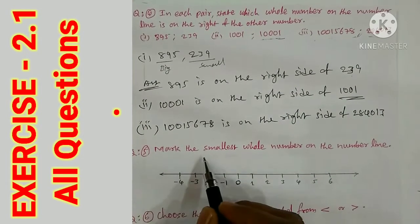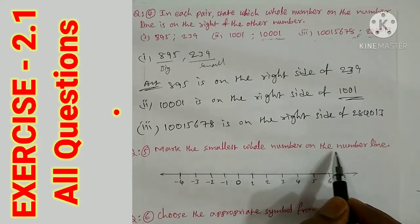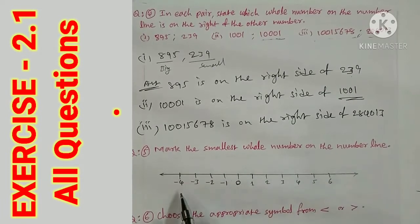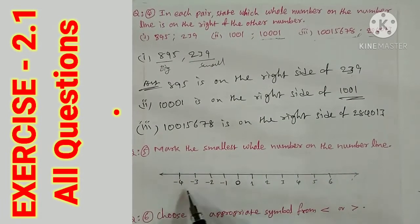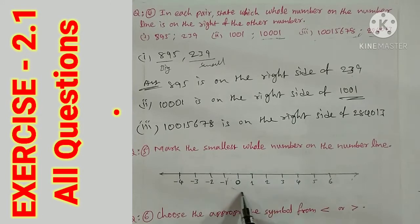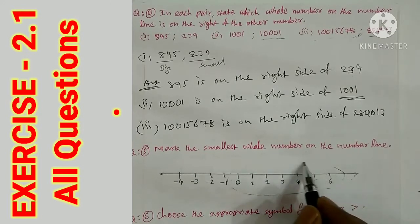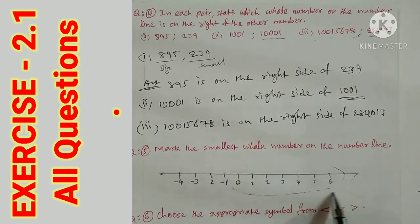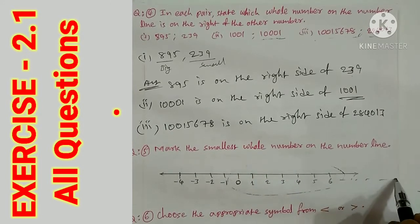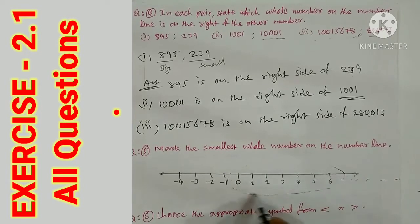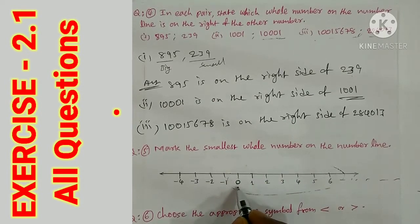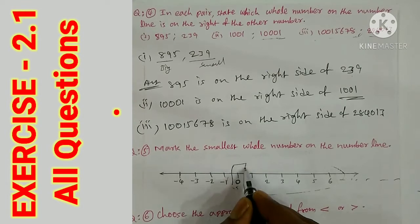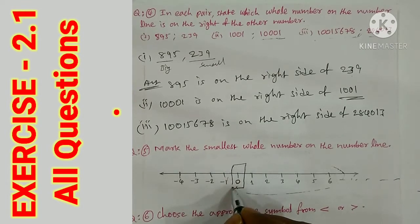Next: mark the smallest whole number on the number line. On the number line, whole numbers go from 0 onwards to infinity. Among these, 0 is the smallest whole number, so 0 is marked as the smallest whole number.